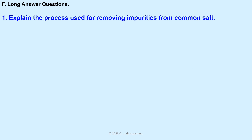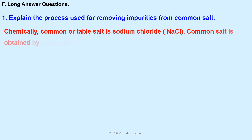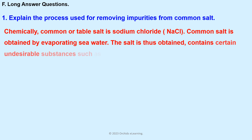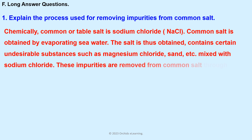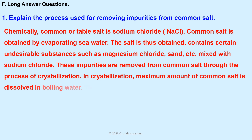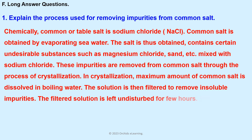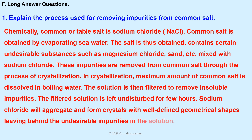Explain the process used for removing impurities from common salt. Common salt is obtained by evaporating sea water. The salt thus obtained contains undesirable substances such as magnesium chloride, sand, etc., mixed with sodium chloride. These impurities are removed through crystallization. Maximum amount of common salt is dissolved in boiling water, then filtered to remove insoluble impurities. The filtered solution is left undisturbed for a few hours, and sodium chloride forms crystals with well-defined geometrical shapes, leaving behind impurities in the solution.